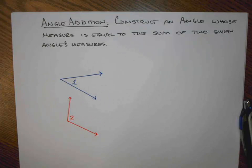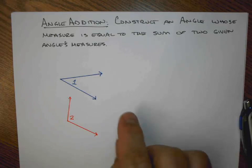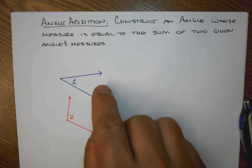So for example, we're given a blue and a red angle, number one and number two. And we want to construct a single angle that is equal to the measure, or whose measure is equal to the sum of these two.